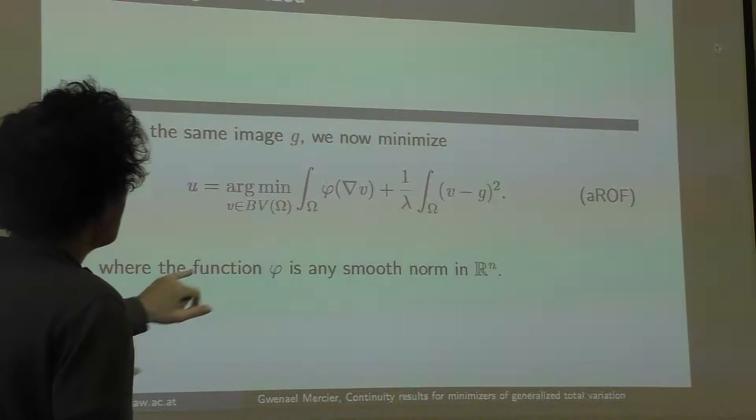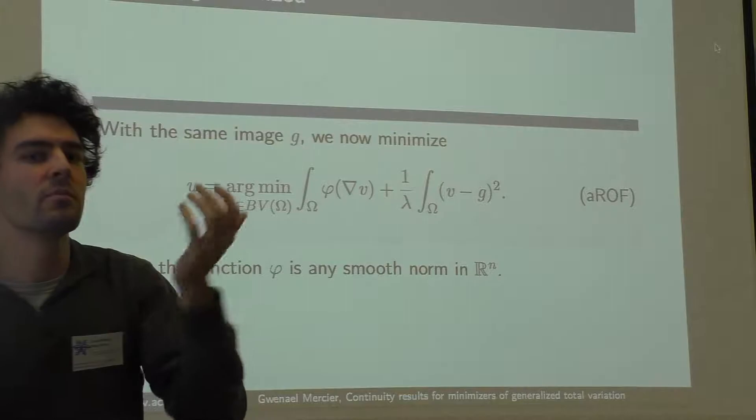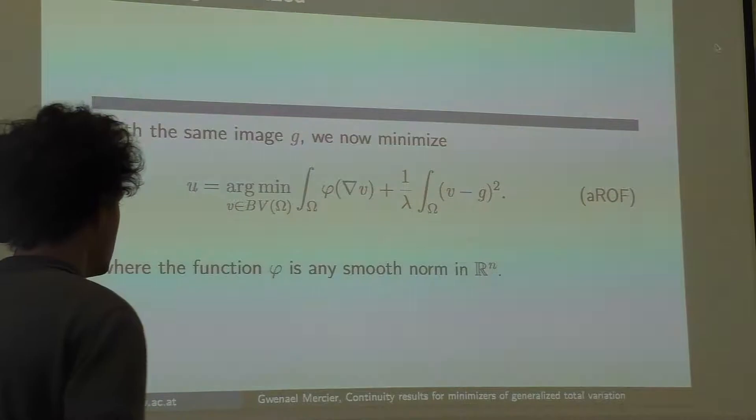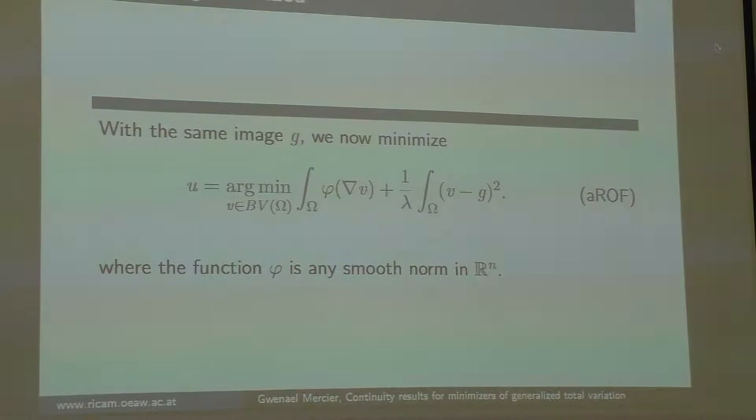Here we will be interested in the same functional, but we replace the Euclidean norm by another norm in ℝ^m, any norm. While here in this talk, it will be smooth. So I will try to prove things about the minimizer u. It's classical that such a thing has a minimizer, because BV has nice semi-continuity properties and compactness. So the existence is not a problem.